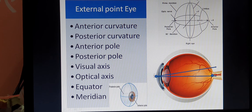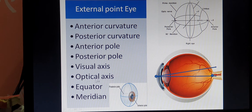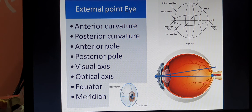The anterior pole is the center of the cornea or corneal curvature, and the posterior pole is the center of the scleral curvature. The optical axis is an imaginary line passing from the anterior pole to the posterior pole. Along this axis, accommodation of light rays does not take place and image is not formed.